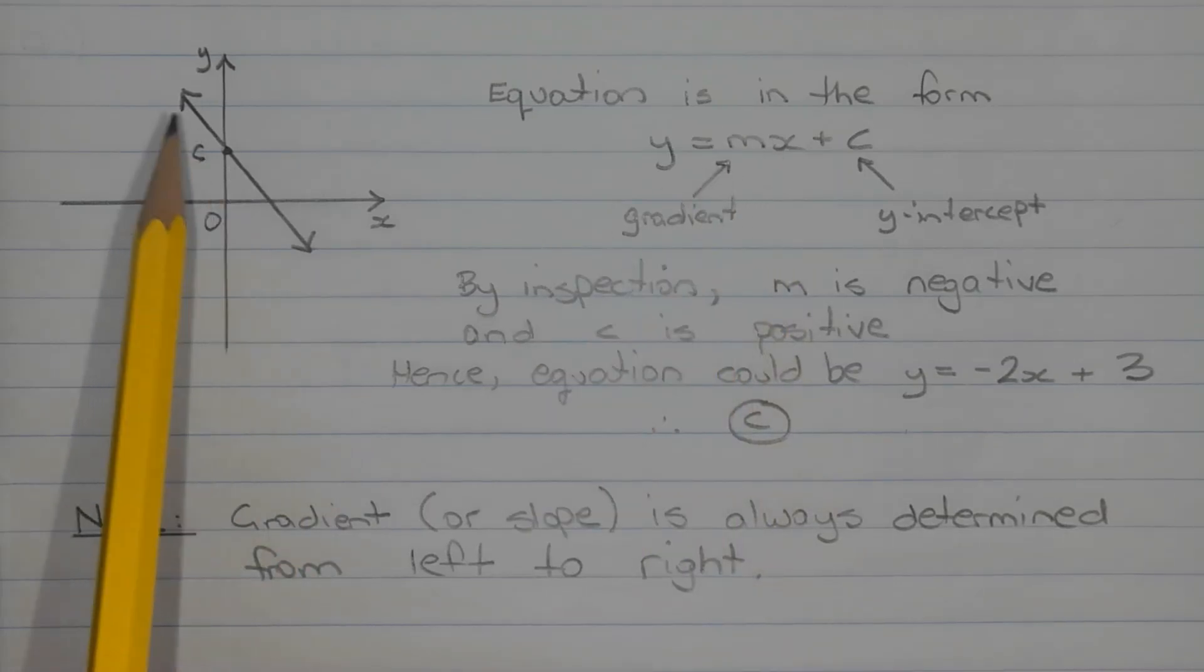We can also see that the line crosses the y-axis at a point above the origin, that means the value of c must be positive.